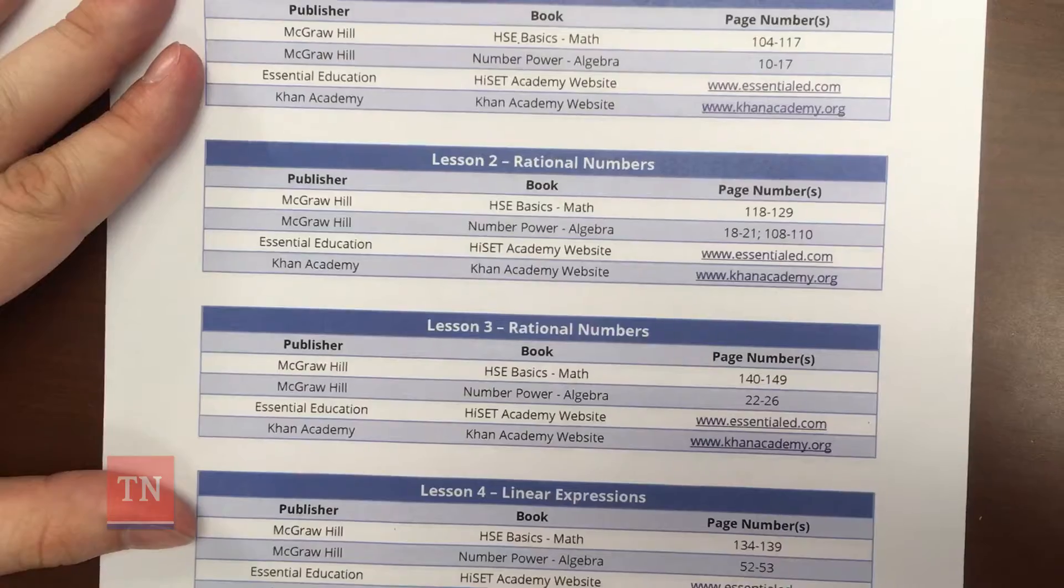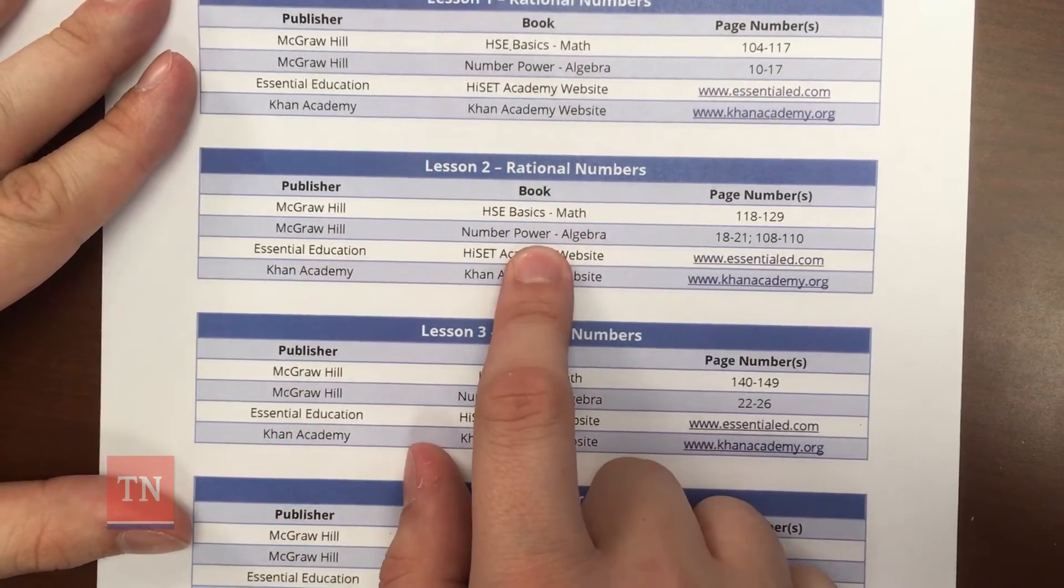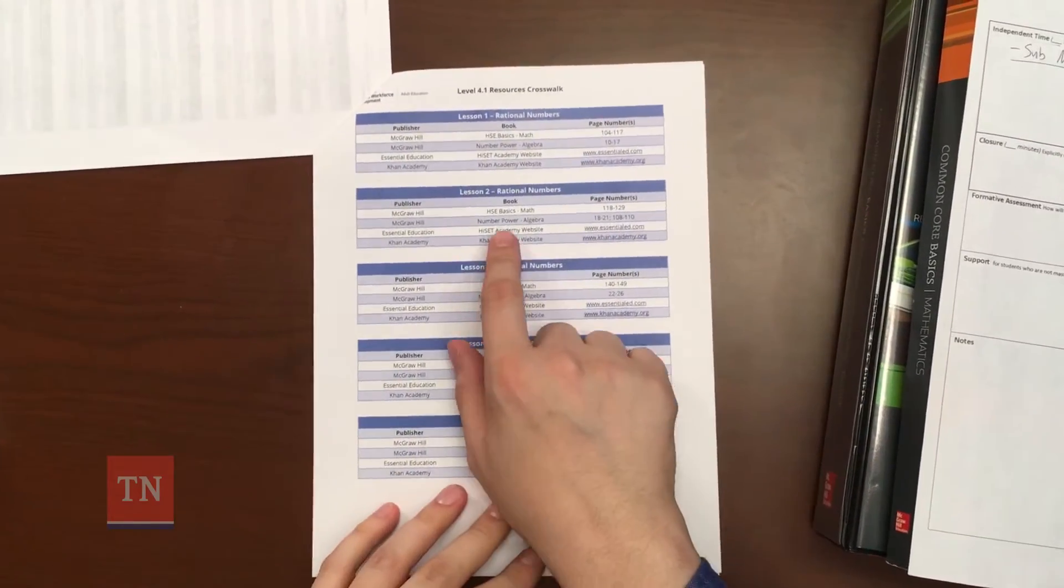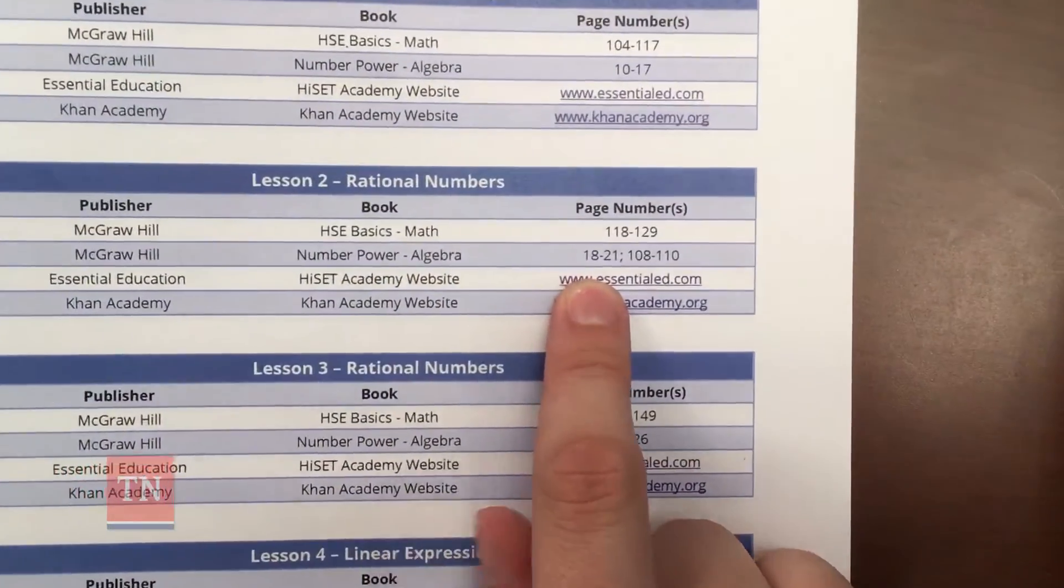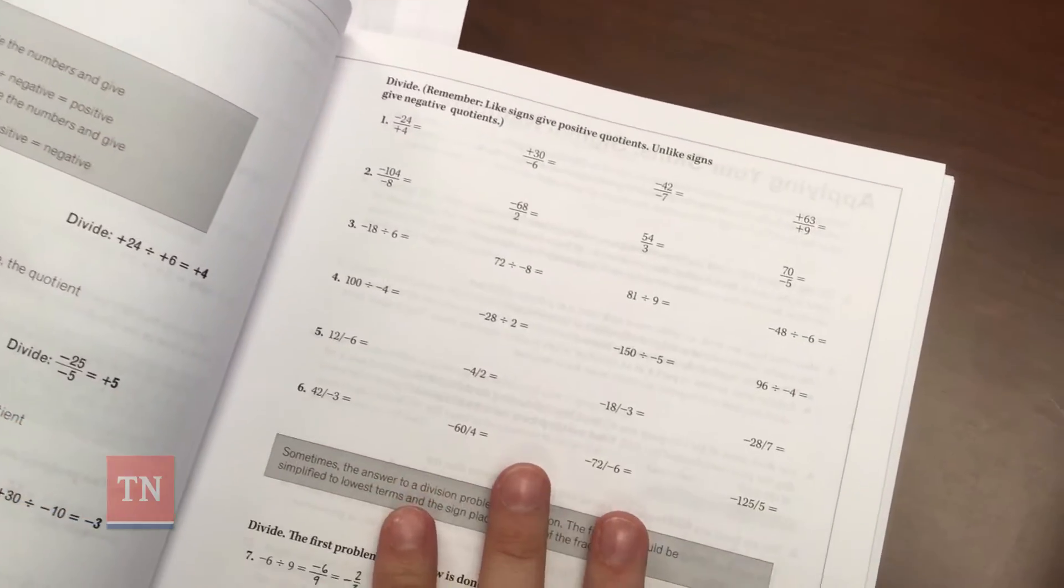Now, we need to refer back to the resources crosswalk to see what other resources are listed. For lesson two, an additional source that is listed is Number Power Algebra. So, for Number Power Algebra, the crosswalk indicates that I would find pages 18 through 21 and pages 108 through 110 useful. These will be good for independent time. I'm going to add this to my lesson plan.